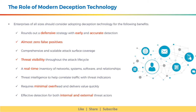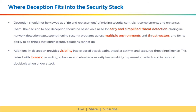Let's understand where deception fits into the security stack. Deception should not be viewed as a rip-and-replacement of existing security controls — it complements and enhances them. The decision to add deception should be based on a need for early and simplified threat detection, closing in-network detection gaps, strengthening security programs across multiple environments and threat vectors, and for its ability to do things that other security solutions cannot. Additionally, deception provides visibility into exposed attack paths, attacker activity, and captured threat intelligence. Paired with forensic recording, this enhances a security team's ability to prevent an attack and respond decisively when under attack.